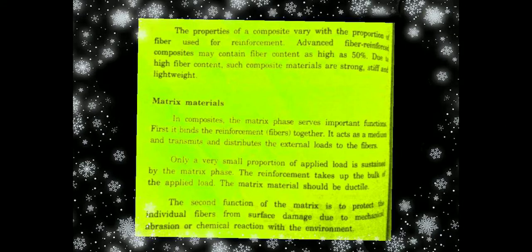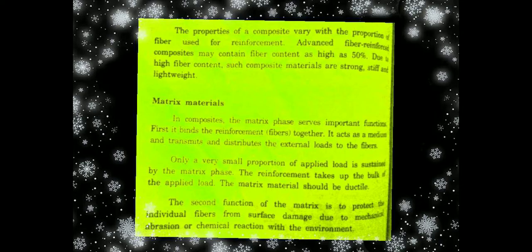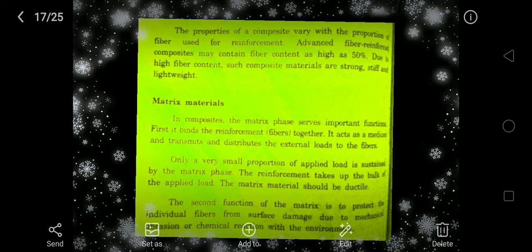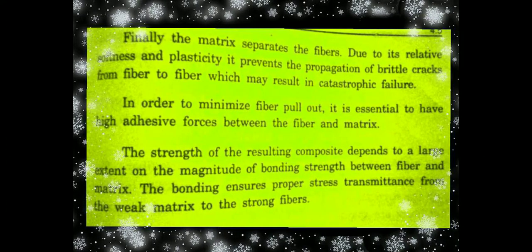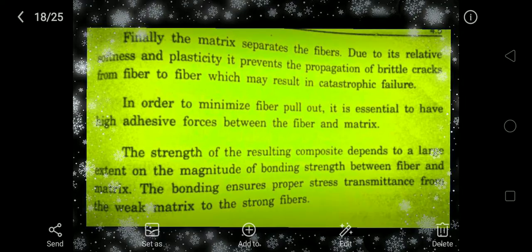The properties of composites vary with the proportion of fiber reinforcement. The fiber content is very important — fiber reinforced composites typically contain 50 percent fiber content. Regarding matrix materials, only a very small portion of the applied load is sustained by the matrix phase — the strength comes from the reinforcement. The matrix must also protect individual fibers from surface damage and from chemical reactions with the environment.